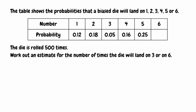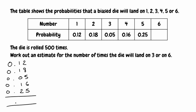For the final question, a table shows the probabilities that a biased die will land on 1, 2, 3, 4, 5, or 6. The die is rolled 500 times. First, we need to find the probability of landing on 6. We add up all the probabilities given in the table, which gives 0.76, then subtract from 1: 1 minus 0.76 equals 0.24. So the probability that the die lands on 6 is 0.24.